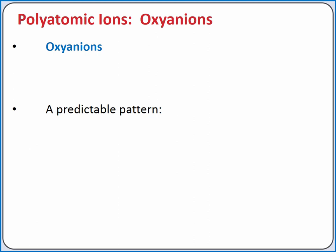Oxyanions are polyatomic ions that contain oxygen and one other element. When naming oxyanions, they follow a predictable pattern depending on the number of oxygen atoms relative to the -ate ion. For example, bromate is BrO₃⁻. If we add an oxygen atom to the -ate ion without changing the charge, we add the prefix per- to the front of the name. So BrO₄⁻ is perbromate.